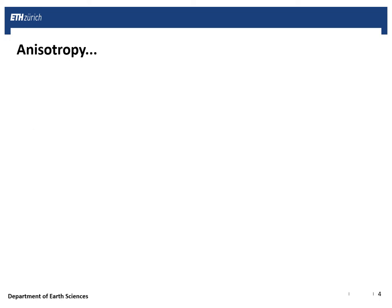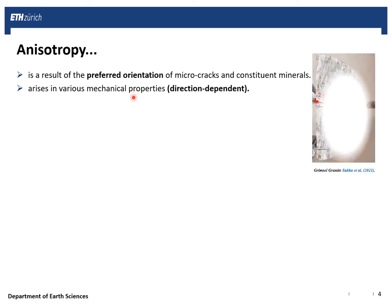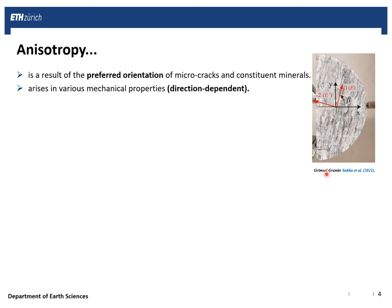Anisotropy exists as a result of the preferred orientation of microcracks and constituent minerals. Once this exists, we can expect that various mechanical properties become direction-dependent. In the Grimsel granite samples used for our experiments, we can visibly observe parallel planes which are the foliation planes of Grimsel granite, and these planes coincide with the isotropy plane. Grimsel granite basically exhibits a transverse isotropic material behavior, where this direction forms the first principal direction of the material and the second one is normal to this direction.